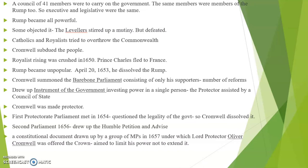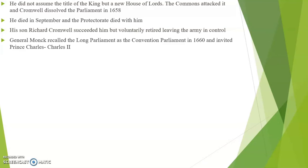A second parliament was summoned in 1656 and drew up the Humble Petition and Advice. A constitutional document was drawn up by MPs in 1657 under which Lord Protector Cromwell was offered the crown — the major intention being to limit rather than extend his power. He did not assume the title of king. Instead he formed a new House of Lords. The Commons attacked it and Cromwell dissolved parliament in 1658. He died in September, and the Protectorate died along with him.